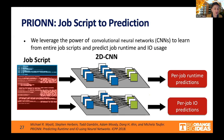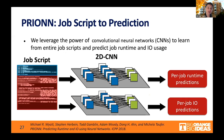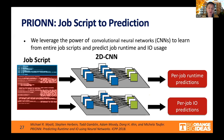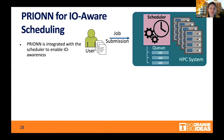We use this image-like representation to look for patterns in the scripts. We developed a two-dimensional convolutional neural network that takes job scripts transformed into image-like representations as input and finds patterns in terms of per-job runtime prediction and per-job I.O. prediction — which is what we need for I.O. awareness in the scheduler. This is exactly what Pryon does: it starts with the job scripts and is integrated into the scheduler.